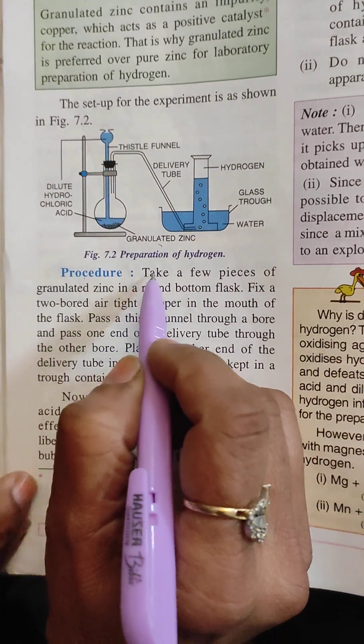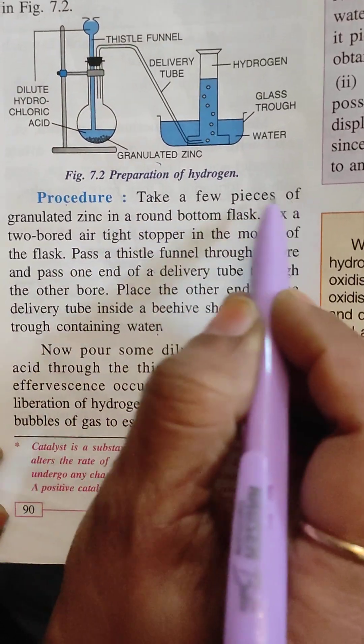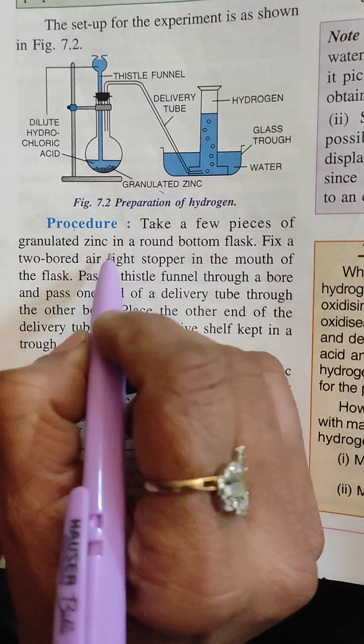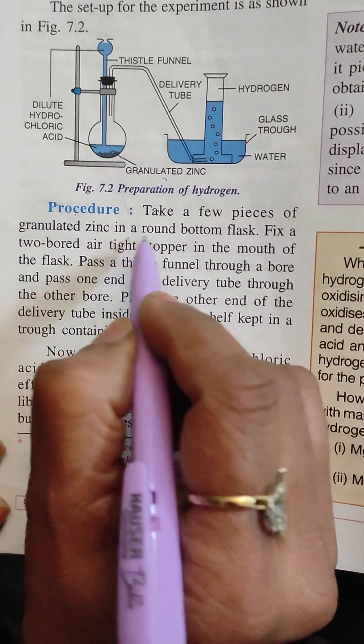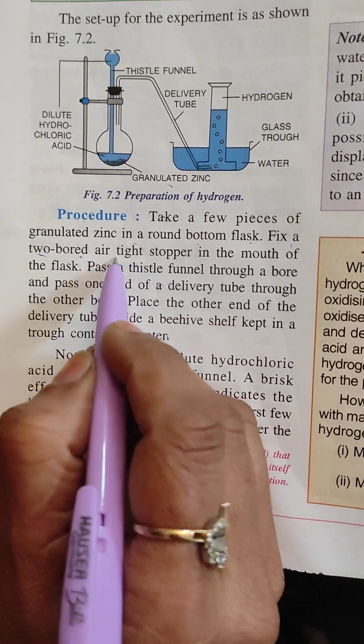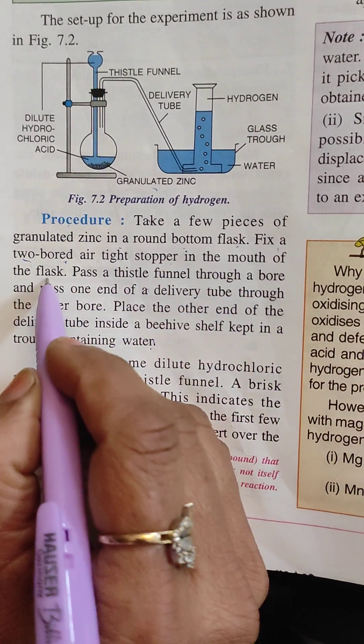Now let me explain what you have just read in this paragraph. Take few pieces of granulated zinc. Here is granulated zinc. Take some pieces of granulated zinc in the round bottom flask. Round bottom flask is this. And then fix the two-bored airtight stopper in the mouth of the flask.